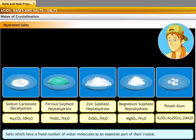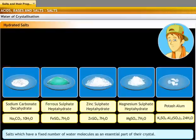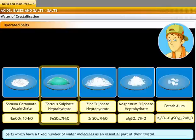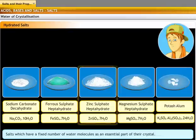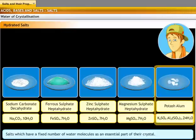Do all salts have water molecules in their crystals? Not all. Only some salts have water molecules in their crystals. For example, sodium carbonate decahydrate, Na2CO3·10H2O, ferrous sulfate heptahydrate, FeSO4·7H2O, zinc sulfate heptahydrate, ZnSO4·7H2O, magnesium sulfate heptahydrate or Epsom salt, MgSO4·7H2O. Potash alum is a sulfate of potassium and aluminum with 24 water molecules, K2SO4, Al2(SO4)3·24H2O.